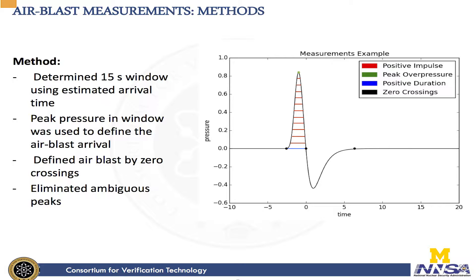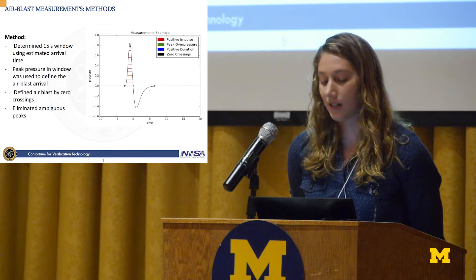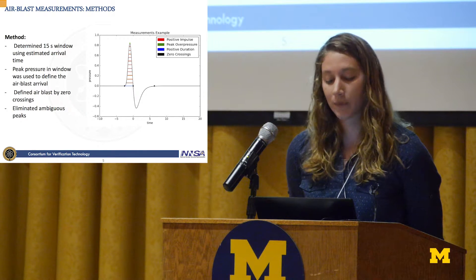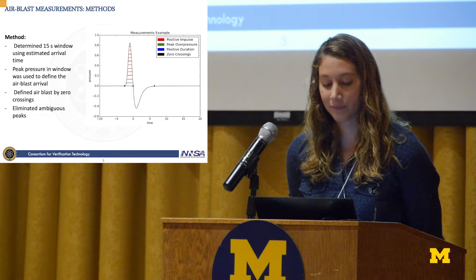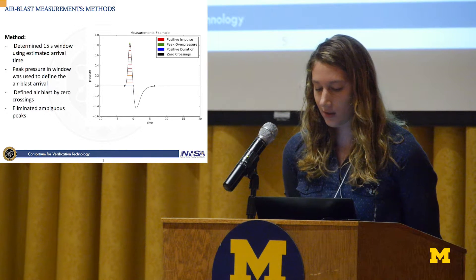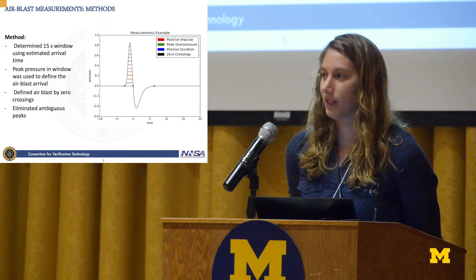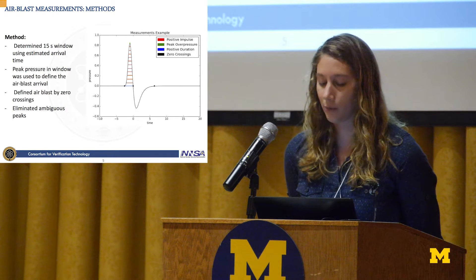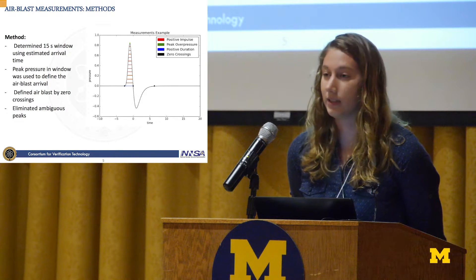In order to both compare our data set with existing air blast models and to verify that we had properly applied metadata corrections, we first made measurements directly on the air blast before running through the yield estimation software. The data was continuously recorded, which required extracting the air blast from the continuous data set. Our primary criteria for doing so was timing — the estimated time of blast and the time it would take for the air blast to travel at the standard speed of sound in the atmosphere. The two most important measurements we made on the air blast are the peak overpressure and the positive impulse. Peak overpressure is the maximum positive overpressure in the time window, and positive impulse is the area under the positive part of the curve. These metrics are important because they've been shown to be closely tied to the yield of an explosion.